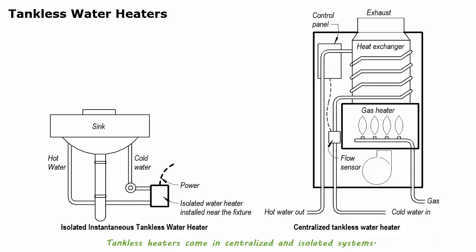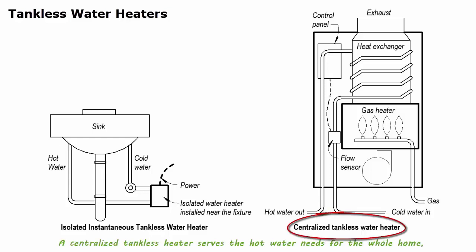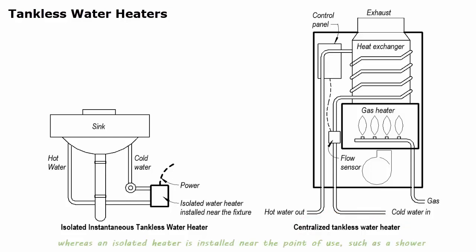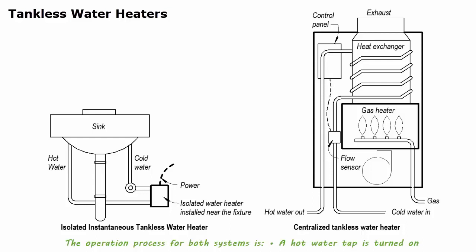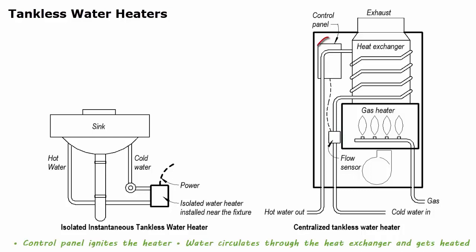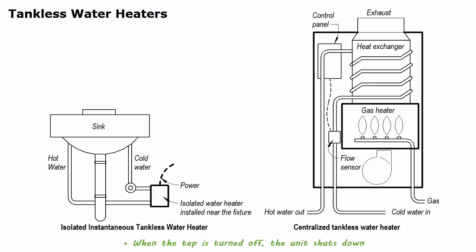Tankless heaters come in centralized and isolated systems. A centralized tankless heater serves the hot water needs for the whole home, whereas an isolated heater is installed near the point of use, such as a shower or bathroom sink, so users can have instant hot water. The operation process for both systems: a hot water tap is turned on, water flows into the heater, a water flow sensor detects the flow, the control panel ignites the heater, water circulates through the heat exchanger and gets heated. When the tap is turned off, the unit shuts down.